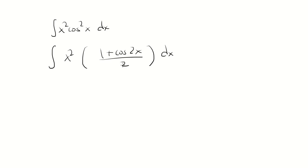And then we'll distribute. So the 1 half will come outside, and we have x squared plus x squared times cosine 2x dx. So we can separate this into two separate integrals.